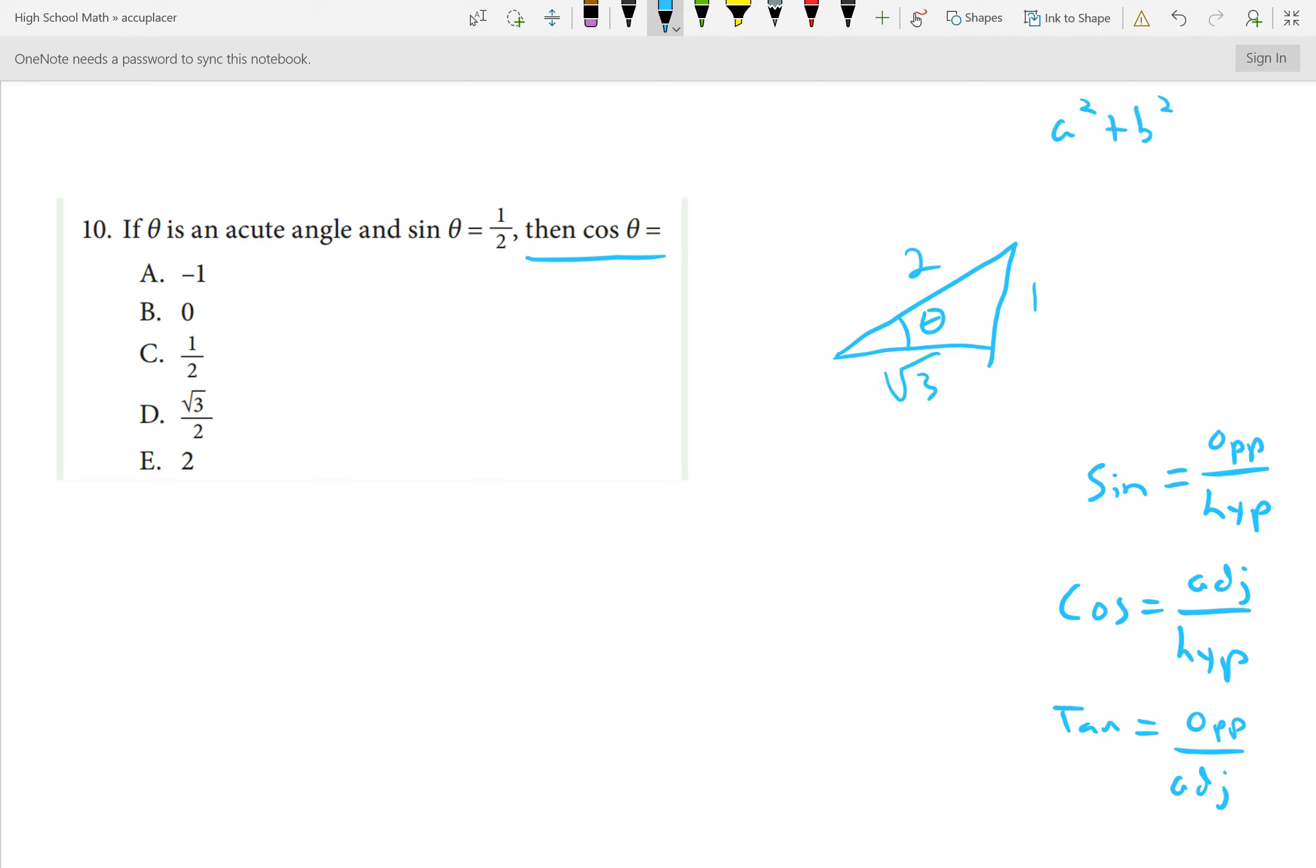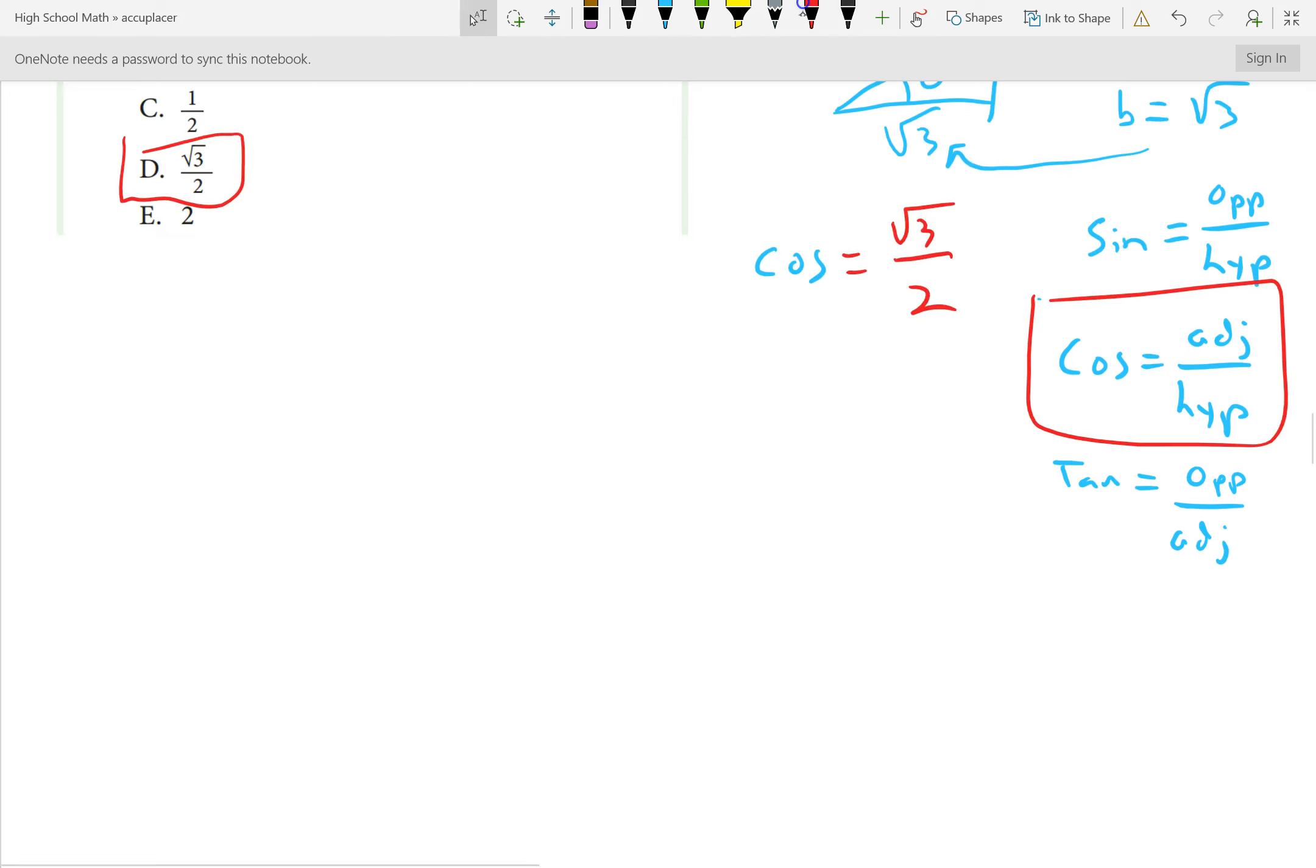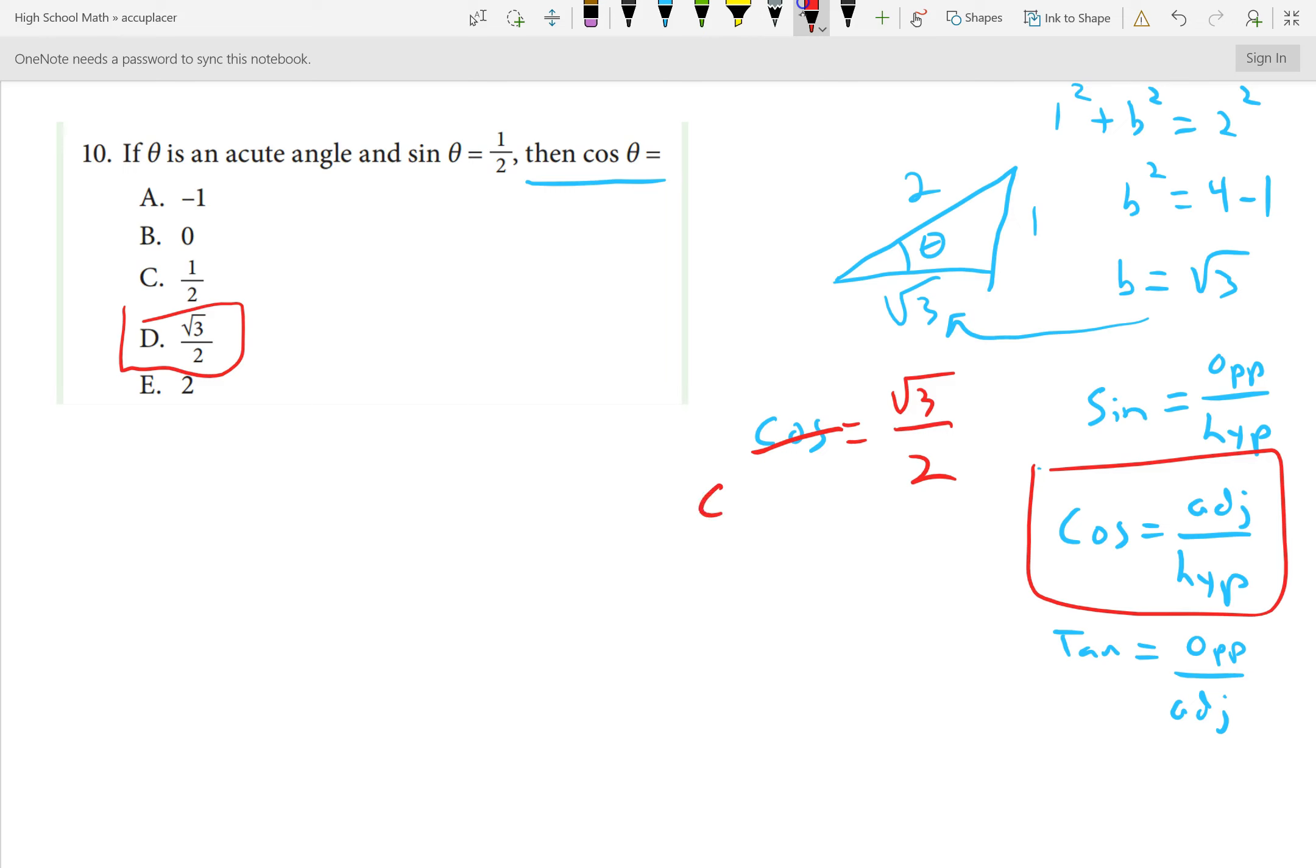A squared plus B squared is equal to C squared. So, in our case, 1 squared plus B squared is going to equal 2 squared. Subtracting 1 squared on both sides gives us B squared is 4 minus 1. So, B is equal to the square root of 3. That's how I got that square root of 3 there. Thus, cosine is adjacent over hypotenuse. So, from this same angle, the adjacent would be square root of 3 and the hypotenuse 2. Cosine of theta is equal to the square root of 3 over 2. Answer is D.